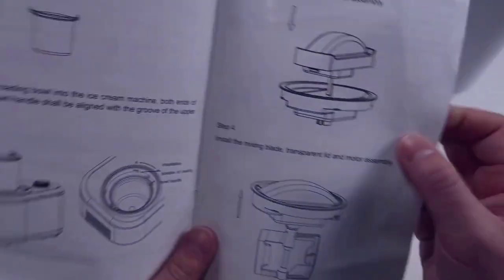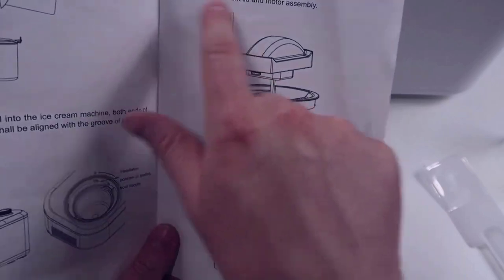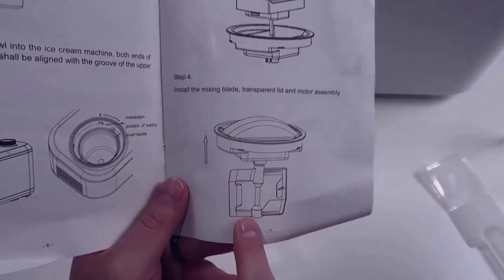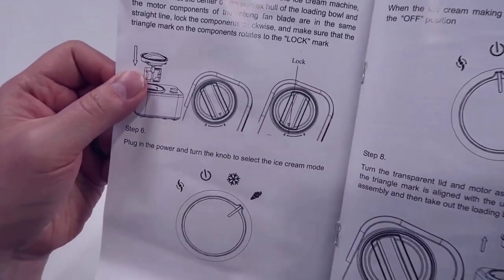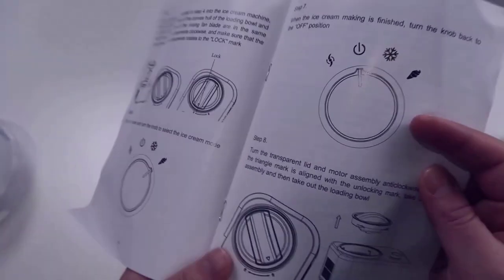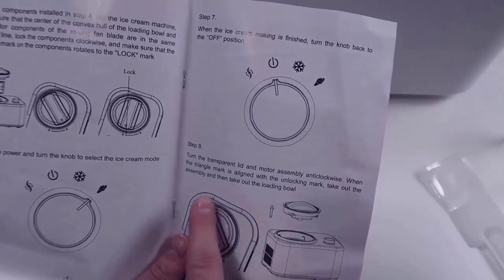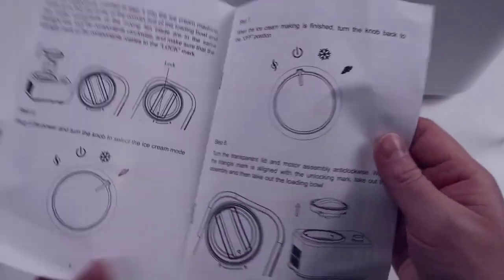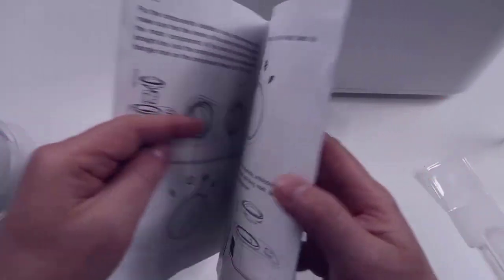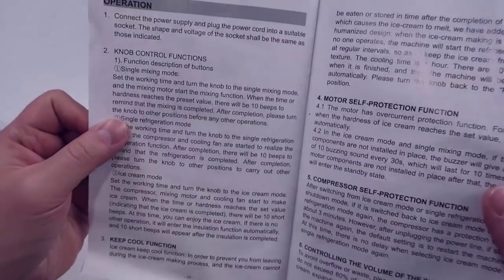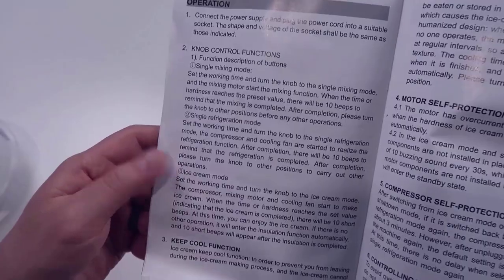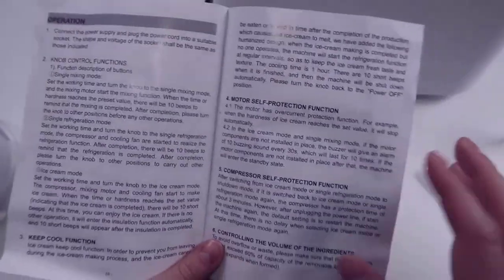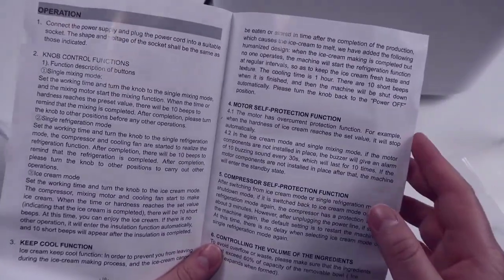They tell you about cleaning all the parts thoroughly before use. Then you're adding your mix into the bowl, loading the container, and installing the lid. The motor assembly adds the mixing blade, and that's pretty much it. It's actually extremely easy. You just lock the top lid, set it to the ice cream mode, and you'll be able to see what's happening through the transparent lid.